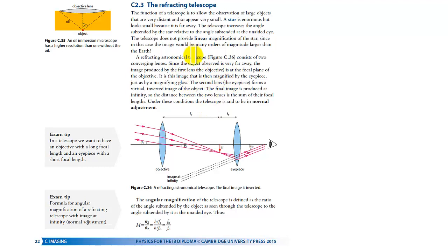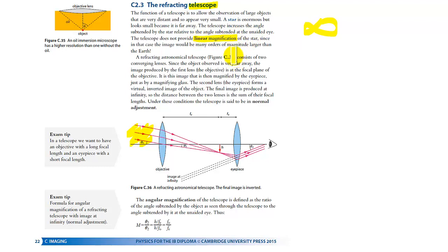A few things to pay attention to: it's very common sense that a telescope is used to look at stars, so the object you are looking at must be from infinity — that's why you can see the diagram here shows it coming from infinity. In that case, we cannot comment on linear magnification directly, so we will be talking about angular magnification, which is a very simple formula that we will discuss soon.